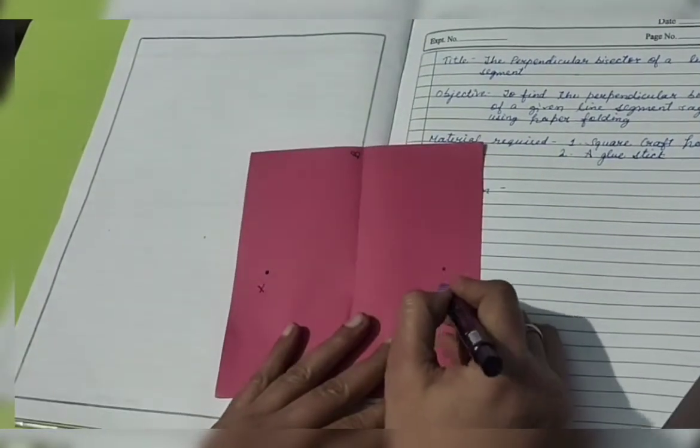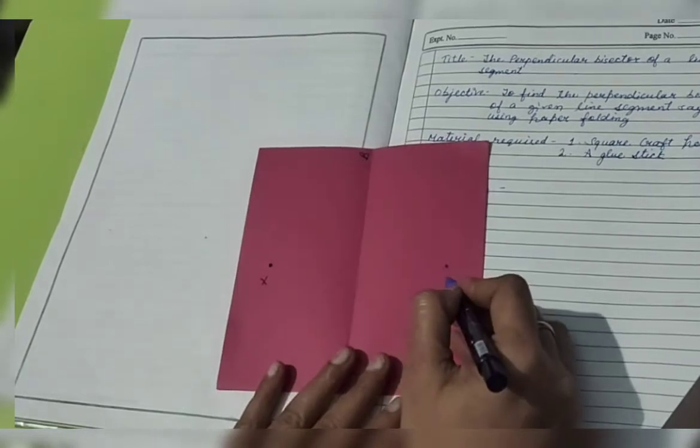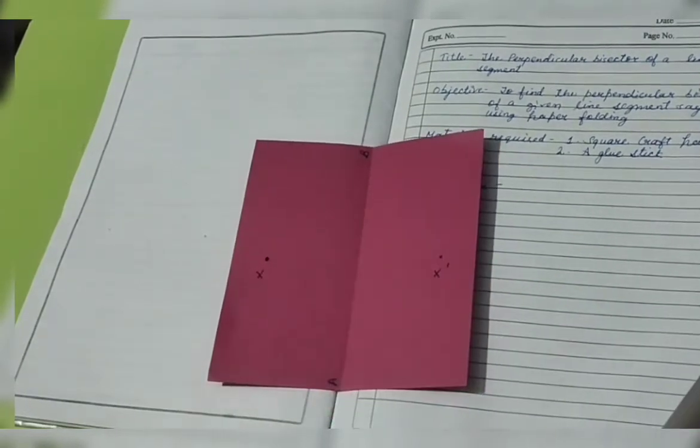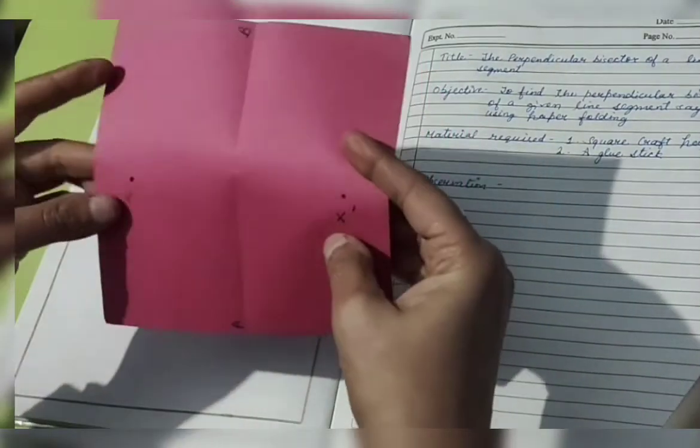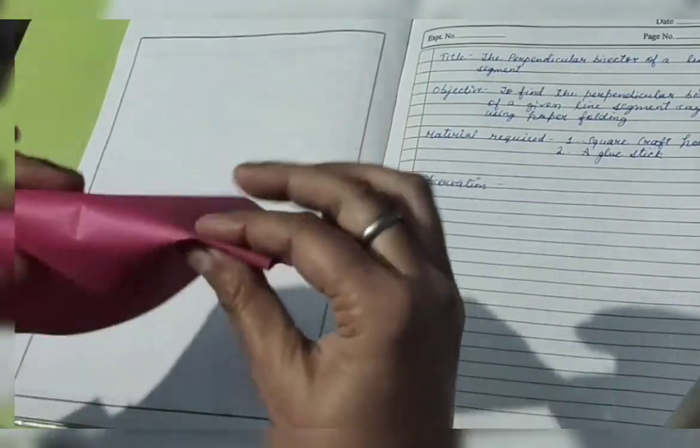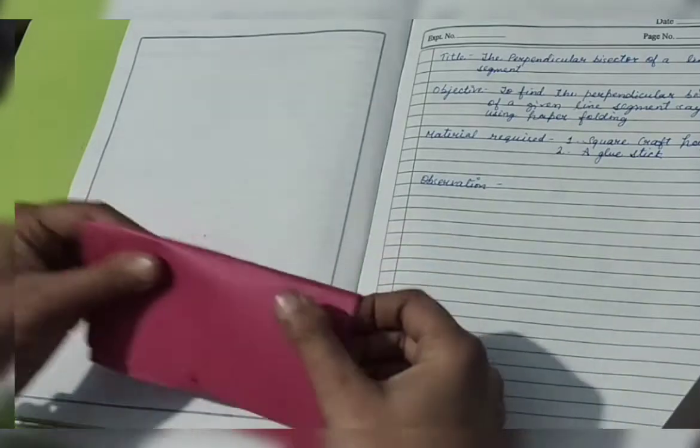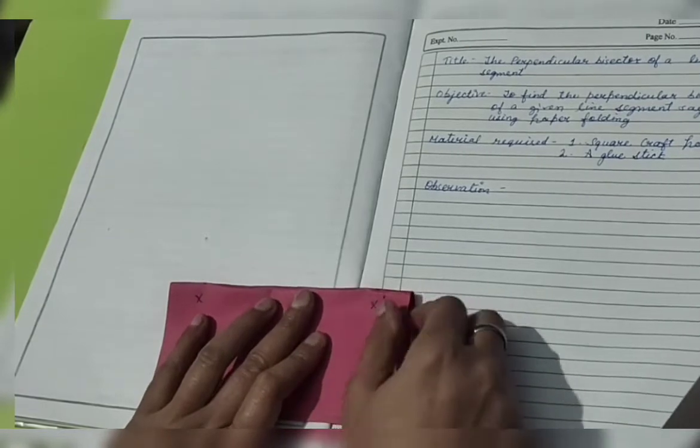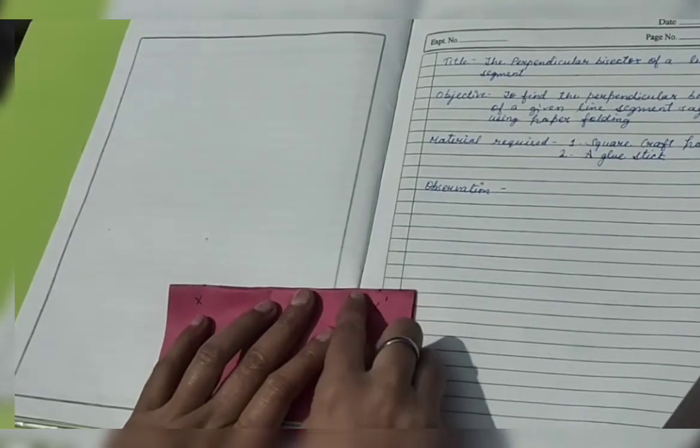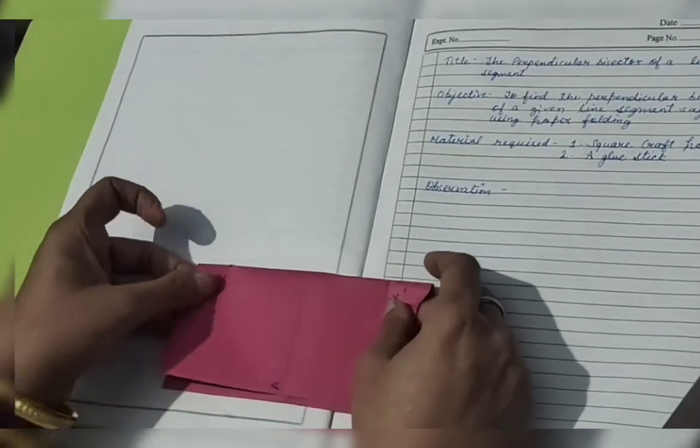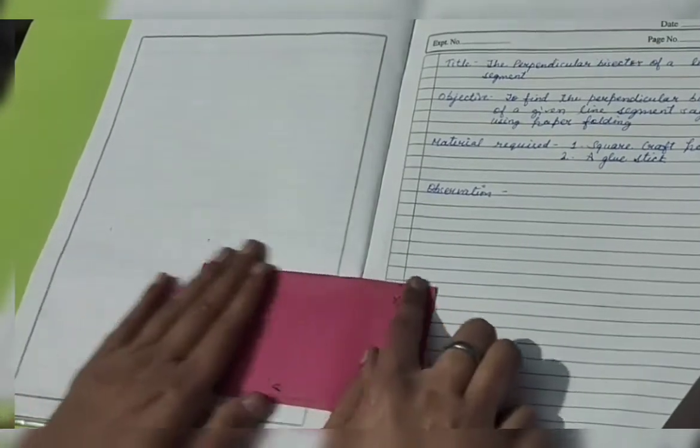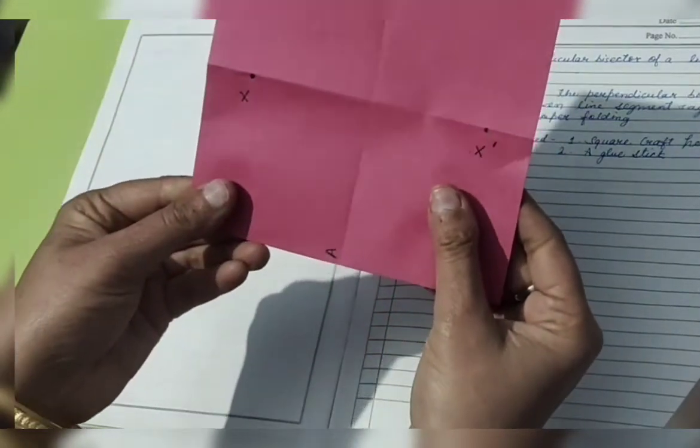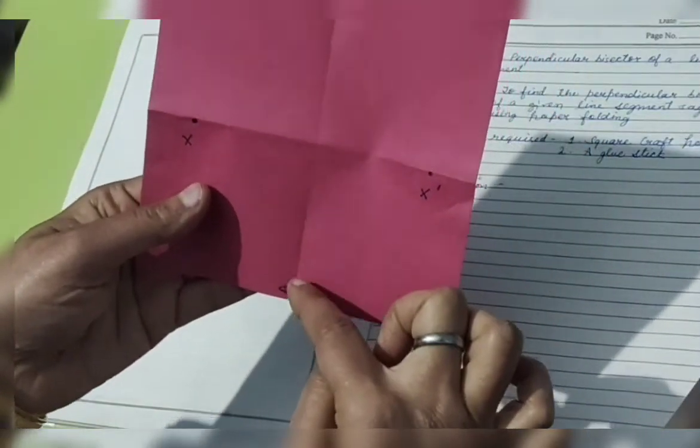And the initial dot which we have taken, let's name it as X, and the second dot which we get after folding the paper is X dash. Now just fold the paper along these dots to form a line. You can see I'm folding in front of you. It's very easy to get a line segment which is crossing these dots.